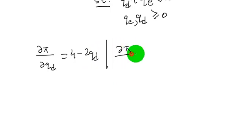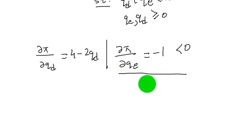Since marginal profits from exports are always negative, the profit-maximizing monopolist will not export anything. Therefore qe = 0.